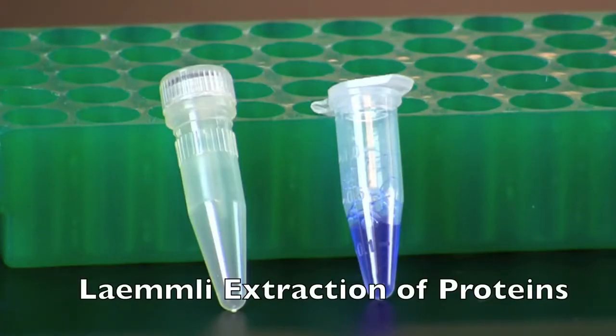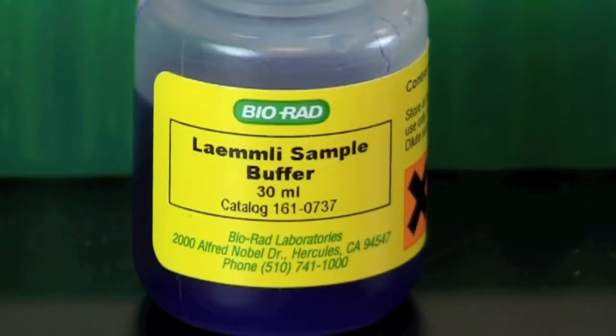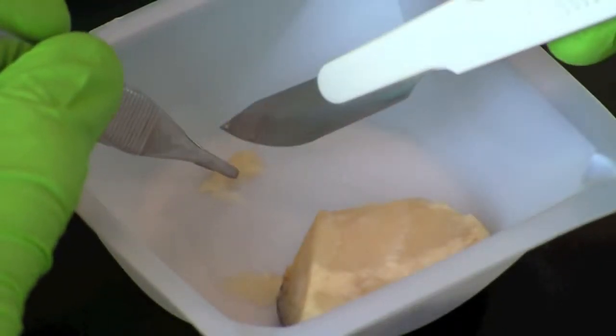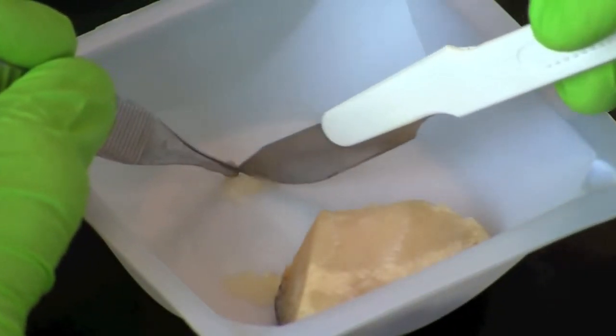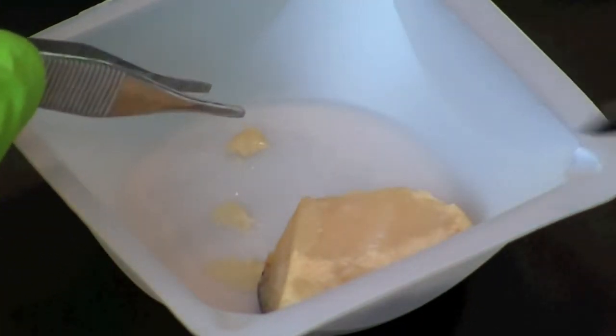To begin, you will need a 1.5 milliliter screw cap tube and a 1.5 milliliter microcentrifuge tube filled with 250 microliters of Laemmli sample buffer. Laemmli sample buffer denatures proteins and coats the proteins in SDS, which makes them negatively charged and ready to be electrophoresed. Cut a piece of fish, approximately 2 millimeters cubed, and transfer it into the microcentrifuge tube with Laemmli sample buffer.